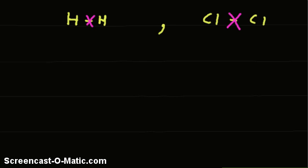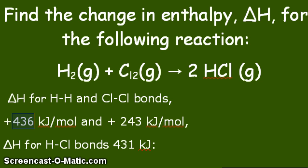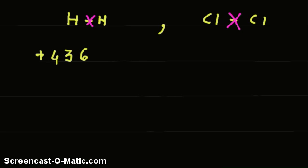Therefore we write 436. Since breaking of bond requires energy, the sign is plus. In the same way, the energy required to break Cl-Cl bond is 243. So we write here 243 and the sign is plus.